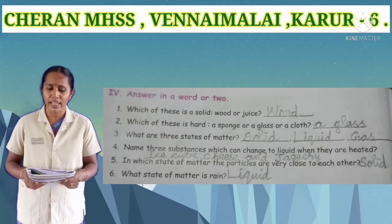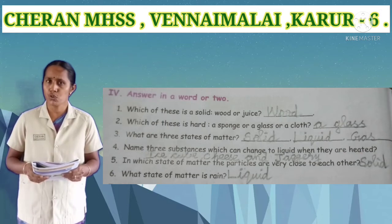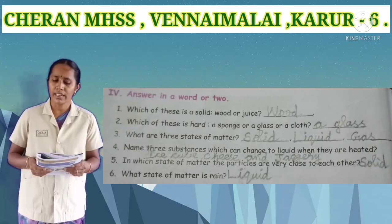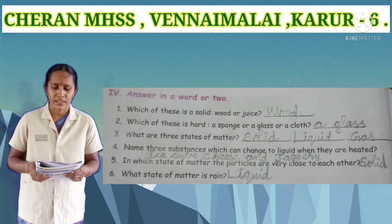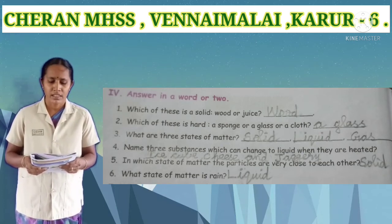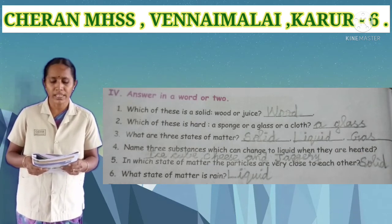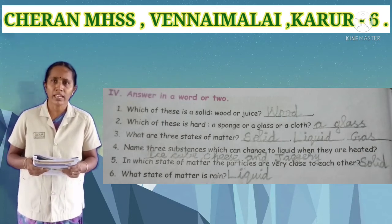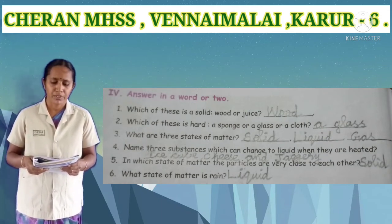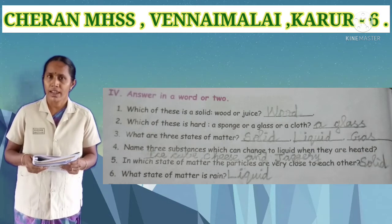Seventh Roman numeral: answer in a word or two. First one: which of these is a solid — wood or juice? Answer: wood. Second one: which of these is hard — a sponge, a glass, or a cloth? Answer: glass. Third one: what are the three states of matter? Answer: solid, liquid, and gas. Fourth one: name three substances which change to liquid when heated. Answer: ice cube, cheese, and jaggery. Fifth one: in which state of matter are particles very close to each other? Answer: solid.